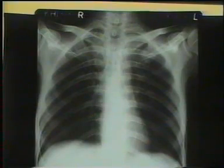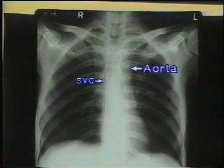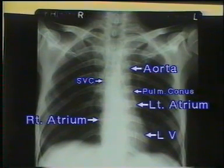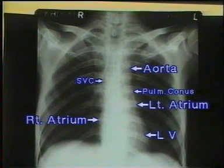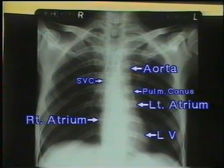Now inspect the cardiac silhouette. First study the cardiac border and measure the cardiothoracic ratio for cardiac enlargement. The left cardiac border is made of aorta, pulmonary conus, left atrial appendage, and the left ventricle. The right cardiac border is composed of superior vena cava and the right atrium. We will study the details later.